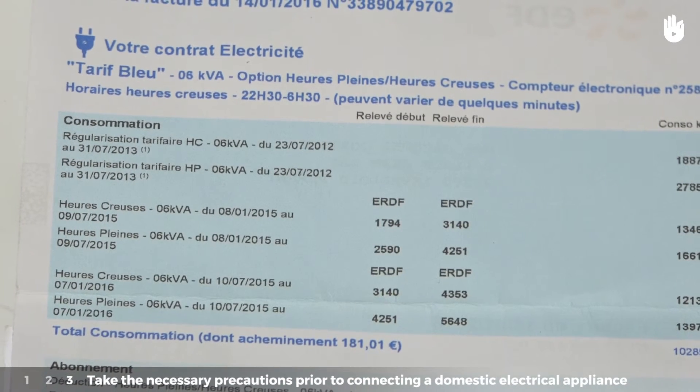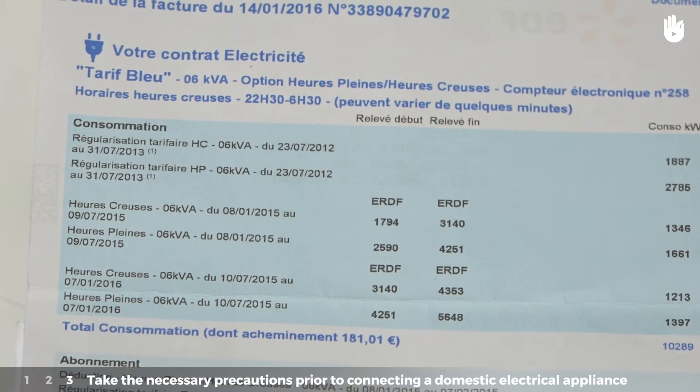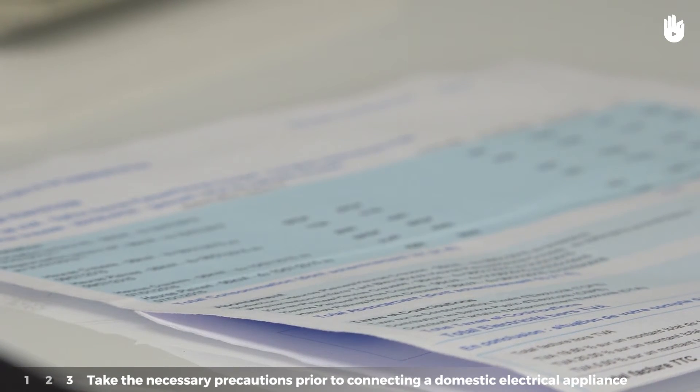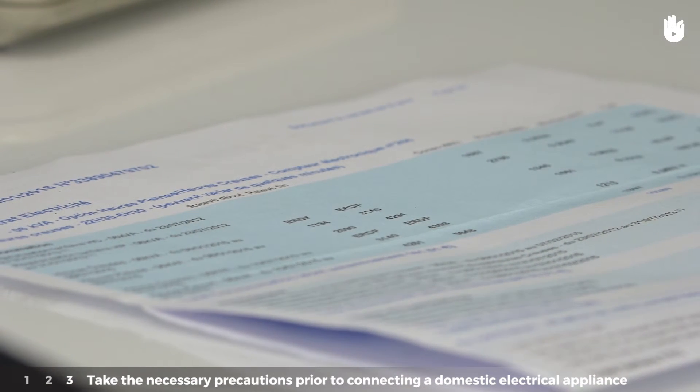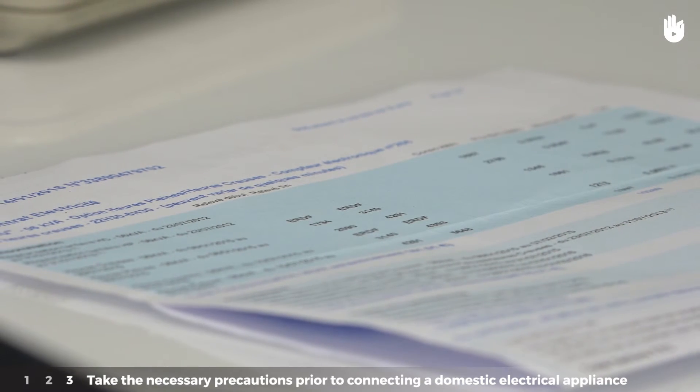For example, 3, 6, 9 or 12 kilovolt amperes, depending on the subscription. Then estimate the value of the wattage of the other electrical appliances that are already installed.